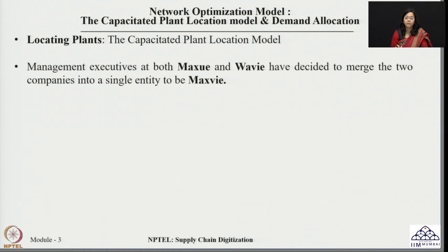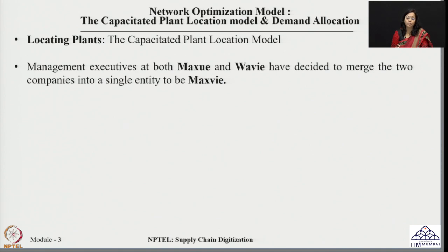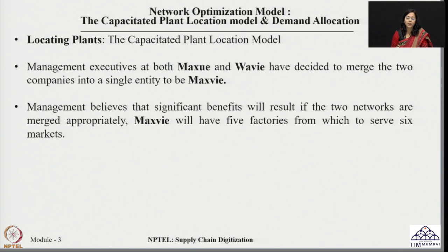Management has decided to merge the two companies — Maxui and Wavy — to form a new company called MaxHui and redesign the whole supply chain network. The belief is that if the two networks are merged appropriately, the new company will fulfill market demands at lower cost. MaxHui now has five factories from which it can serve six markets.